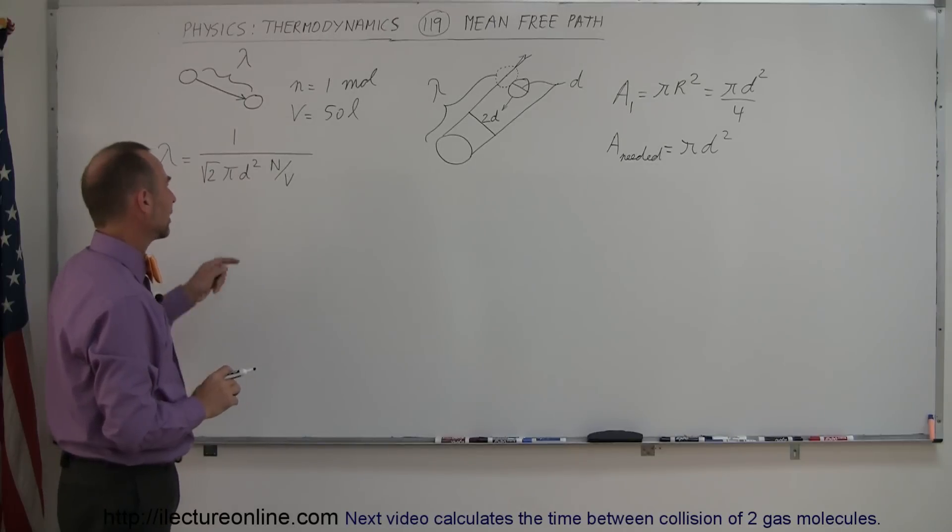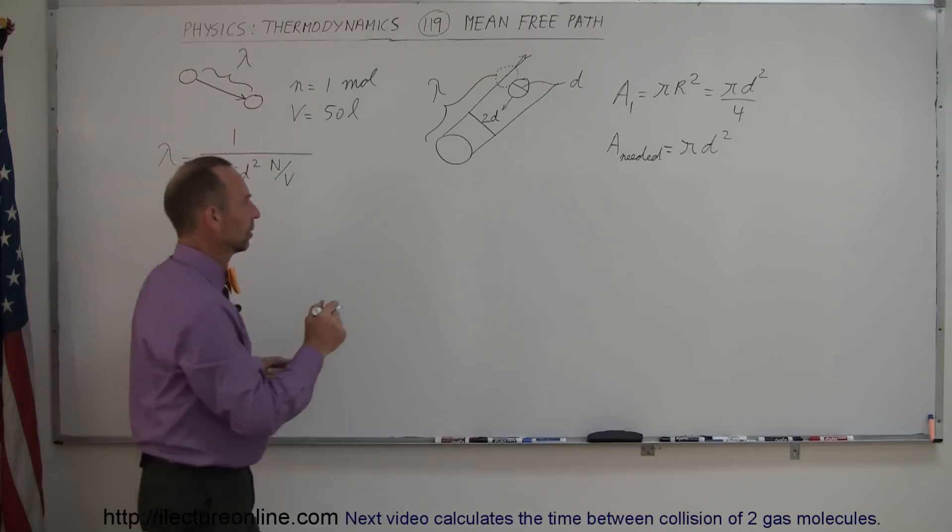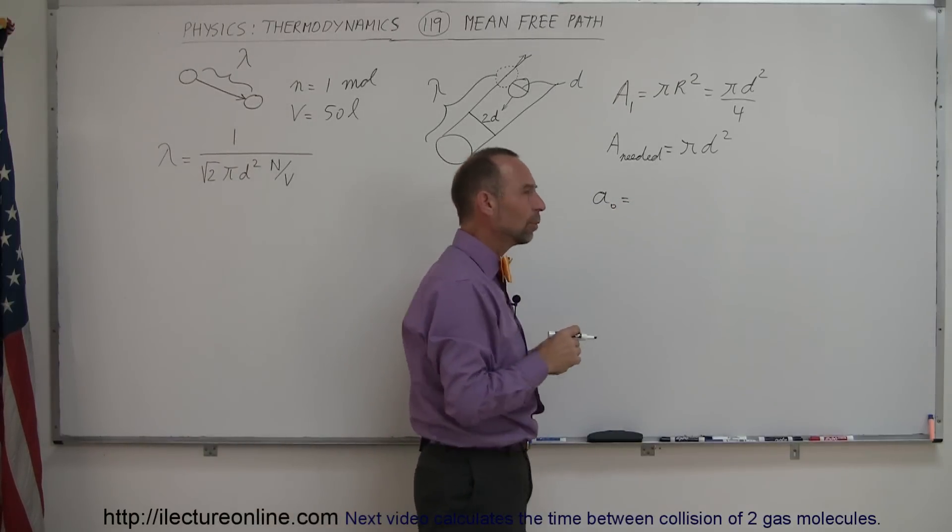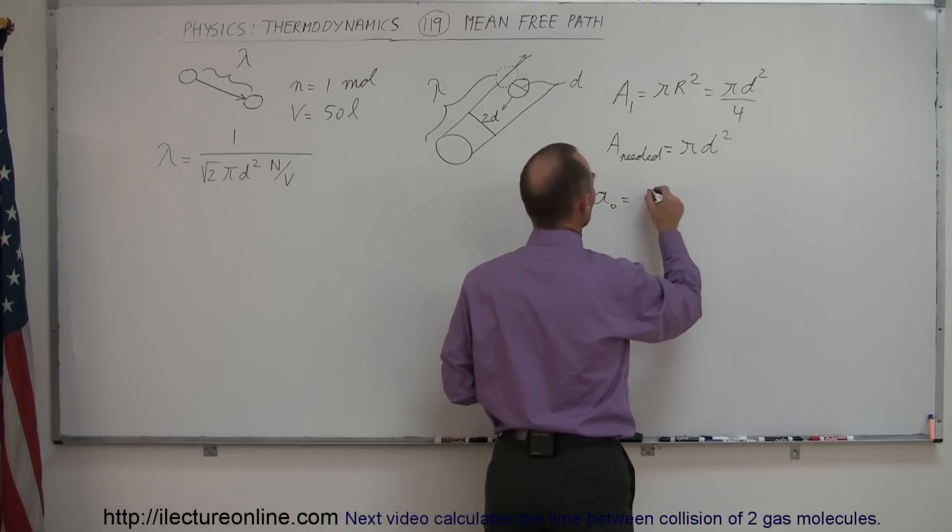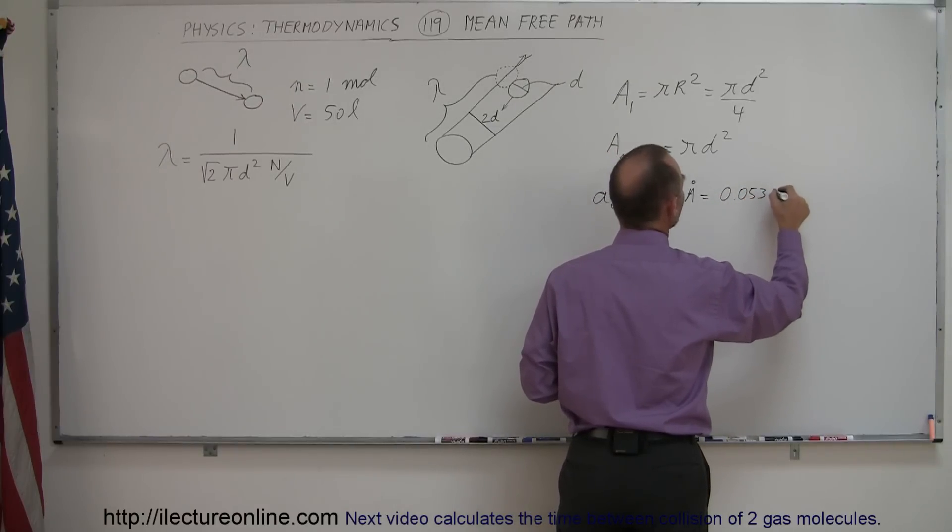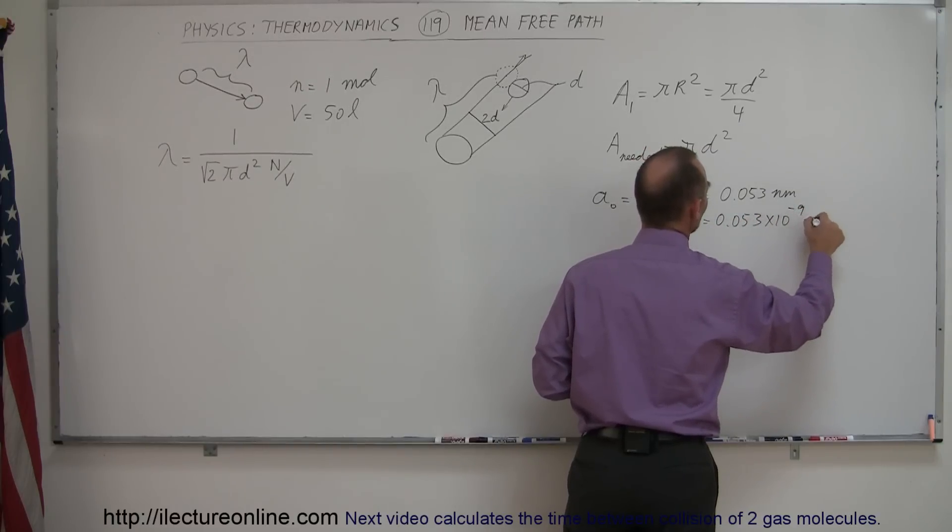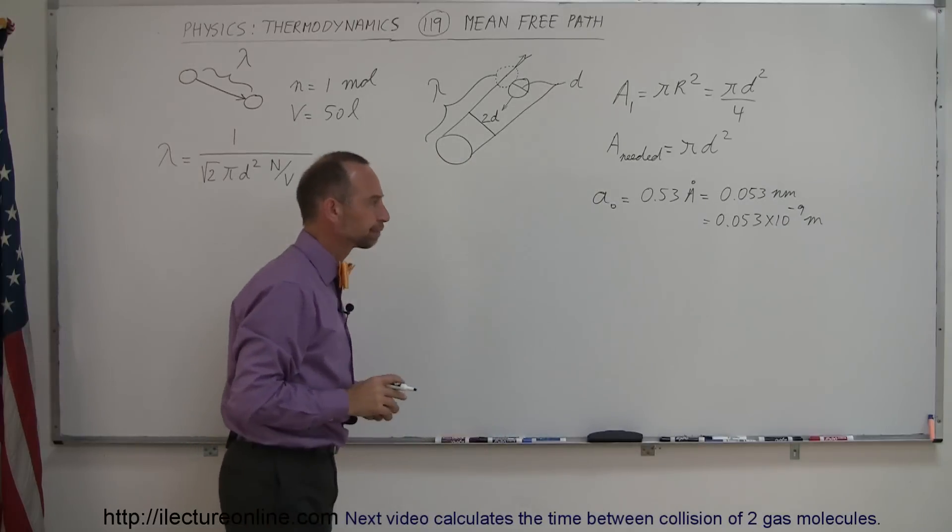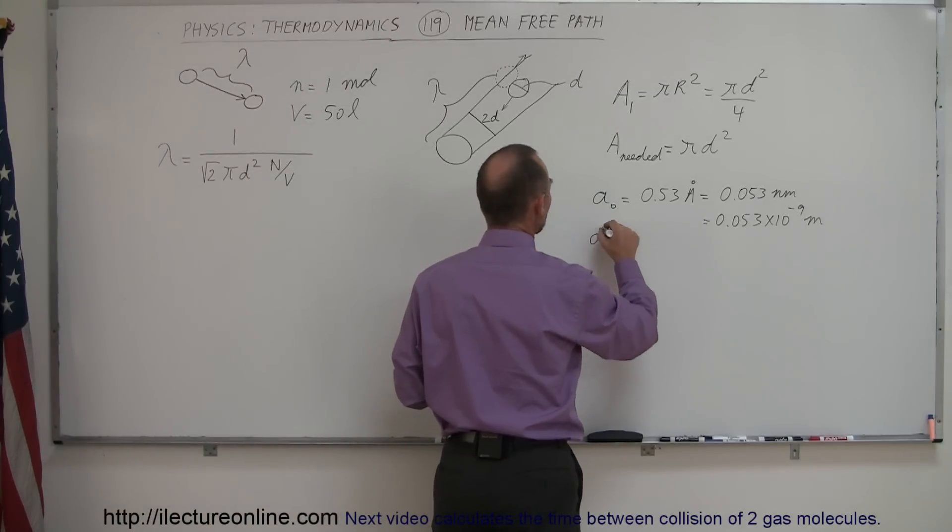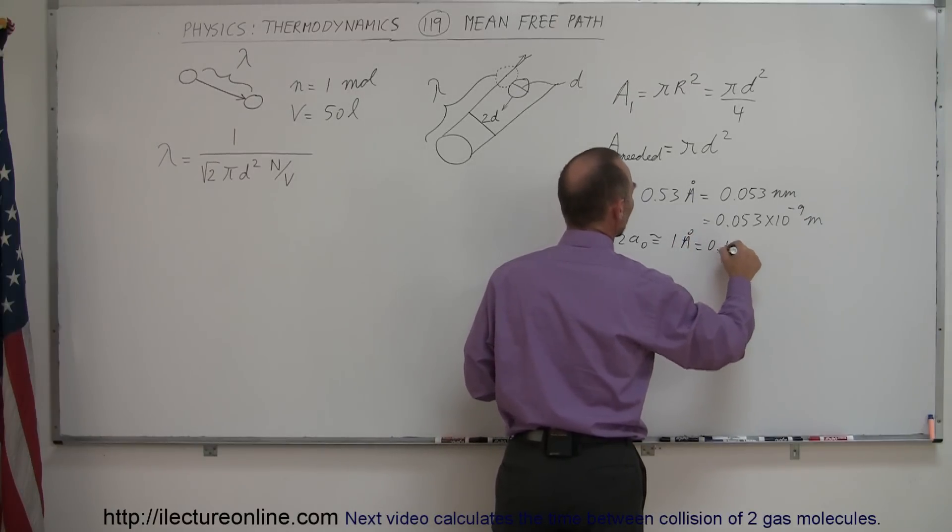So we need to find out the d for a molecule. So what is the diameter of a molecule? I know that the Bohr radius, and so that is typically A sub-naught, which is the radius of a hydrogen atom, that's called the Bohr radius, which is kind of a representative size of an atom or a molecule, is equal to 0.53 angstroms, which is equal to 0.053 nanometers. So the diameter would be twice that, so I can say that d would equal 2a sub-naught, which is equal to about 1 angstrom or 0.1 nanometers.